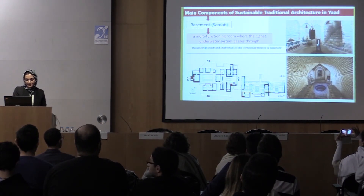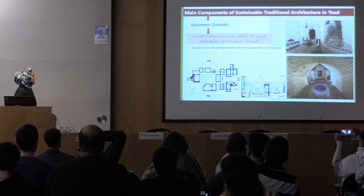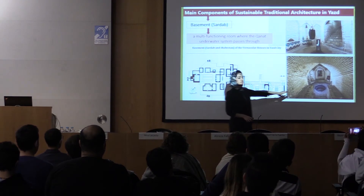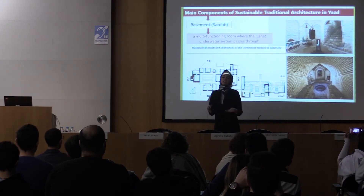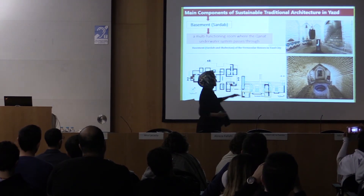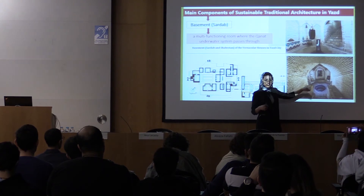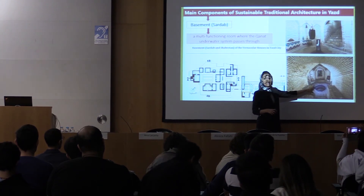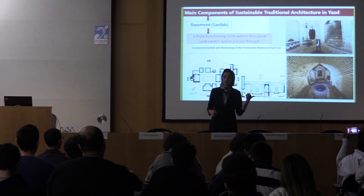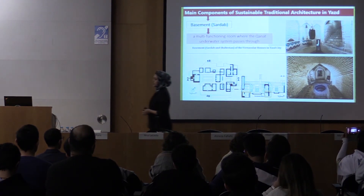Another component is the sardab, or basement. As you can see, it is dug under the ground — sometimes 60 meters underground. It is connected to the water canals of the city so when canals pass the building, water can come to each person's house sardab. The sardab can also be connected to the windcatcher so the cool air from the windcatcher passes through and makes the hot wind cool.